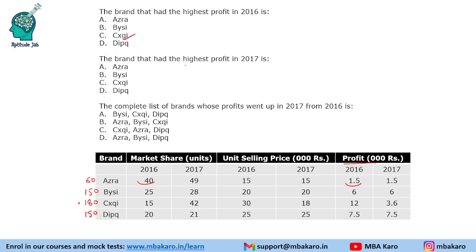The next question asks: which brand had the highest profit in 2017? Multiplying 2017 unit counts by profit per unit: A gives 49 × 1.5 = 73.5; B gives 28 × 6 = 168, clearly a big number; C gives 42 × 3.6 = 151.2; and D gives 21 × 7.5 — since 21 × 7 = 147 plus 10.5 — that is 157.5. We could have eliminated Azra because its profitability is low despite high market share, but the profit per unit is high for the others. The answer is YC.